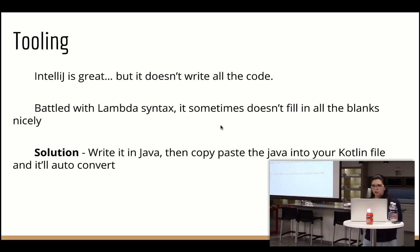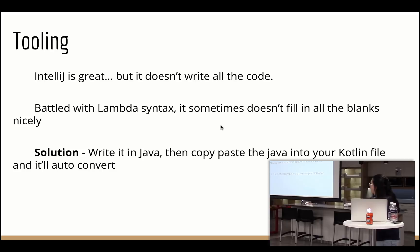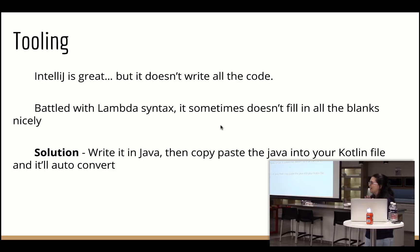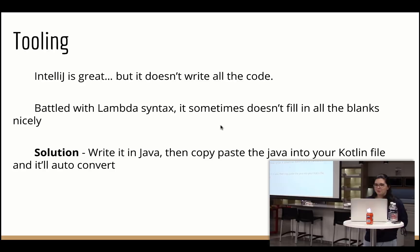Another difficulty was tooling. IntelliJ is a great IDE but it doesn't write all your code. Coming from Java 6 without lambdas, I found the lambda syntax difficult and the IDE didn't auto-predict a lot of it. My solution was to write the code in Java, copy-paste it into a Kotlin file, let it auto-convert, accept the suggested fixes, and then I'd have nicely written Kotlin code. I did this quite a few times just to get a feel for what a lambda looks like and how it works.